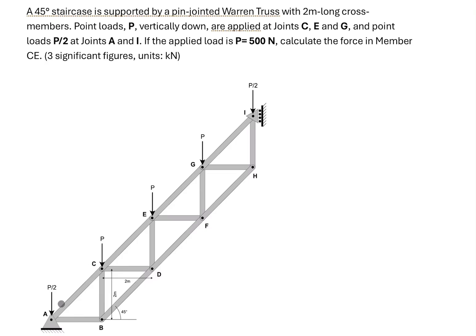In this question we have a Warren truss, which can be used to support a staircase. For this truss, we have two-meter-long cross members, meaning all members are two meters long. There is a point load at joints A, C, E, G, and I. At joints C, E, and G the point load is P, but at supports A and joint I the loading is half of P.